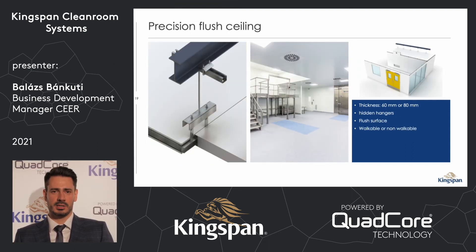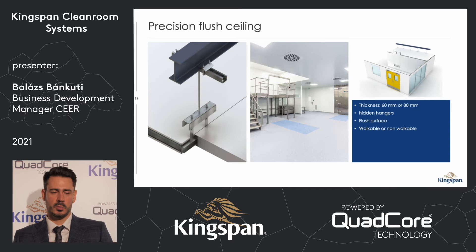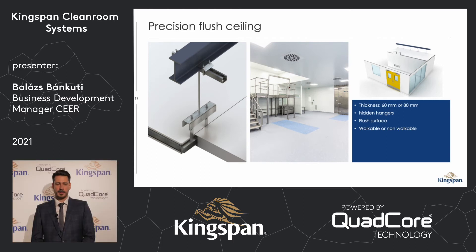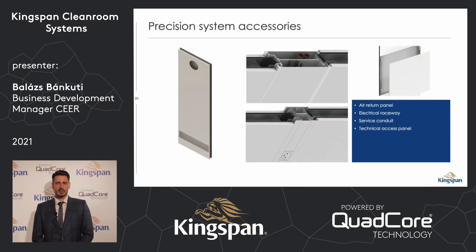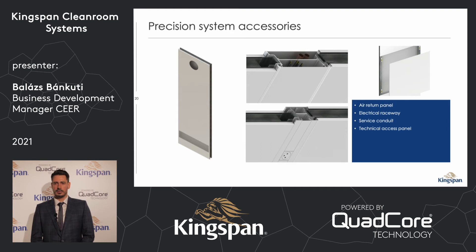In this slide we will speak about the precision ceiling. The precision ceiling is available in 60 or 80 mm thickness and has a hidden suspension — if you stand in the cleanroom you will not see the suspension. It has different types of core: PIR, quad core, mineral fiber, or aluminum honeycomb. The precision system has four accessories: the air return panel for exhaust air, the technical access panel where you can hide items behind the metal sheet, and the electric raceway and service conduit.